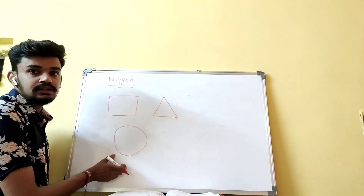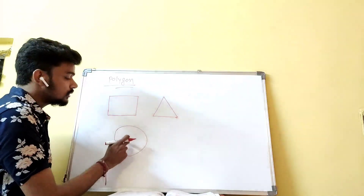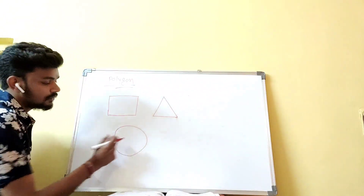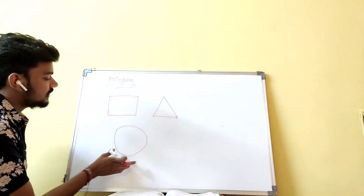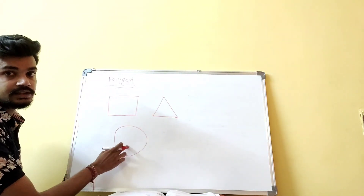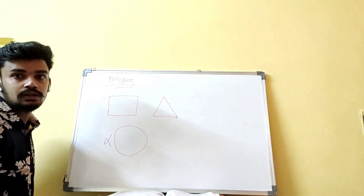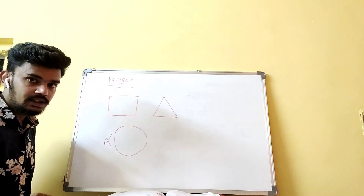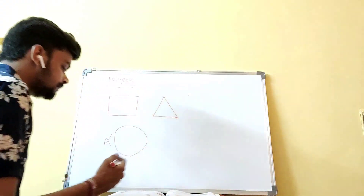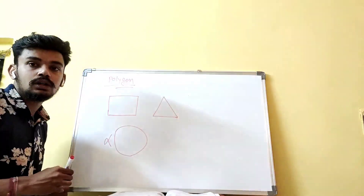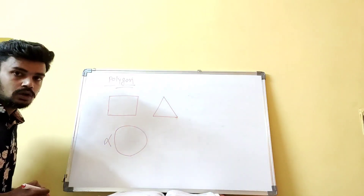As you can see, this is the circle. In the circle, one thing is complete — it is a closed figure — but is it made up of straight lines? No. So the circle is not included in the polygon.